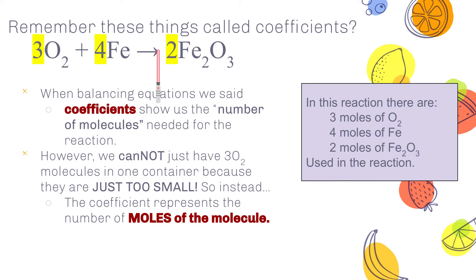So if you remember the things called coefficients, remember in a balanced equation, the number in front is the coefficient. When balancing equations, we said the coefficients shows us the number of molecules needed for that reaction, which is true. However, we can't just have 3 O2 molecules in one container because they're just too small. So instead, the coefficient really means the number of moles.